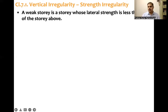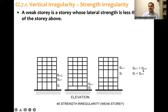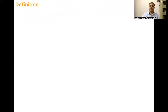A weak story is a story whose lateral strength is less than that of the story above — that is the clause. As you can see, Si, Si+1, and Si+2 are different stories. What the code says is Si is less than Si+1, meaning the strength of the i-th floor is less than the strength of the i+1 floor, or the strength of the i+1 floor is less than the strength of the i+2 floor. So the definition states: if the strength of any floor is less than the strength of the immediate floor above, that is a weak story — a strength irregularity.